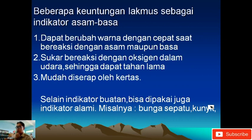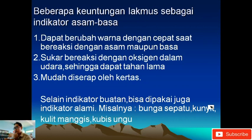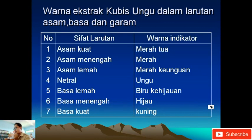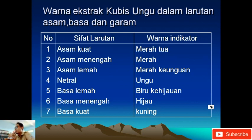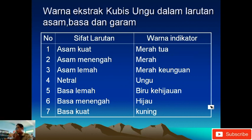Indikator alami antara lain: bunga sepatu, kunyit, kubis ungu, dan kulit manggis. Warna ekstrak kubis ungu dalam larutan asam, basa, dan garam: jika larutan asam kuat berwarna merah tua, asam menengah berwarna merah, asam lemah berwarna merah keunguan. Kalau basa menengah warnanya berbeda, kalau basa kuat warnanya pun berbeda lagi.